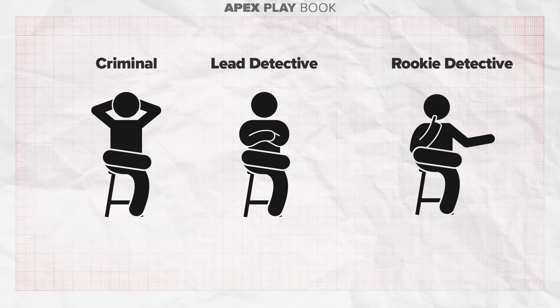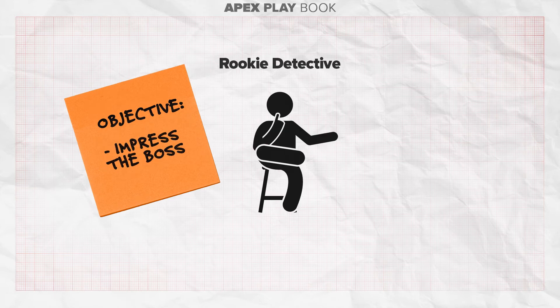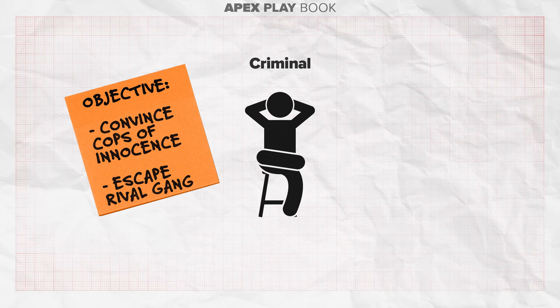A great way of structuring the improvisation is giving each character an objective. For example, the detective needs to crack the case or they're fired. The rookie is on their first day and needs to impress. The criminal needs to convince the police of their innocence so they can leave, as there's a rival criminal gang after them.